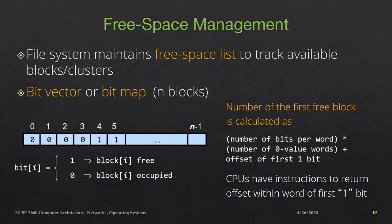One simple approach is to use a bit vector or bitmap in which each bit represents a disk block. A bit vector will have n bits used to indicate whether blocks are free or occupied. The bitmap contains n bits starting from the 0th bit to the n minus 1th bit. Each bit has an entry of 0 or 1 — 0 indicates the block is occupied, and 1 indicates the block is free.